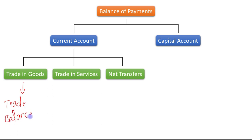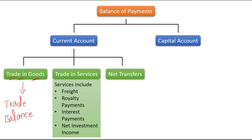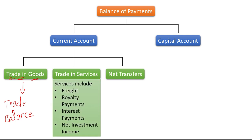Basically, the trade balance records the trade in goods. Services include freight, royalty payments, interest payments, and net investment income.